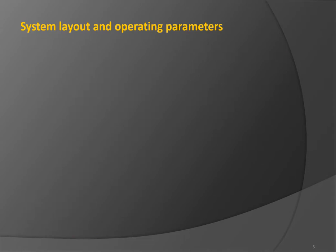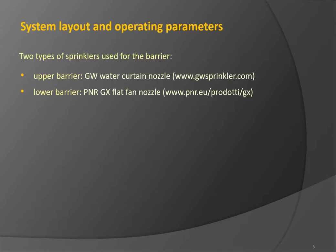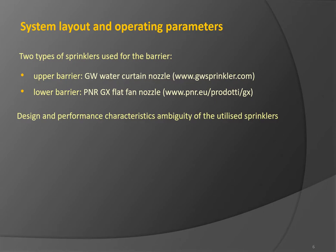Two types of sprinklers used in the arrangement had been identified: the GW water curtain nozzle for the upper part of the barrier and the PNR GX flat fan nozzle for the lower part of the barrier. Nevertheless, a significant amount of ambiguity still exists about the design and performance characteristics of the utilized sprinklers — especially important are the droplet initial diameter and speed.